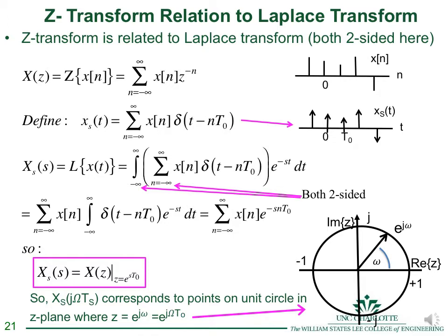The Z-transform is related to the Laplace transform. X(z) is the Z-transform from its definition. If we define x_s(t) as the sum of the discrete samples x(n) times a delta function — replacing the finite-height samples with impulses whose weight equals the corresponding sample — then x_s(t) is a continuous-time function corresponding to x(n).